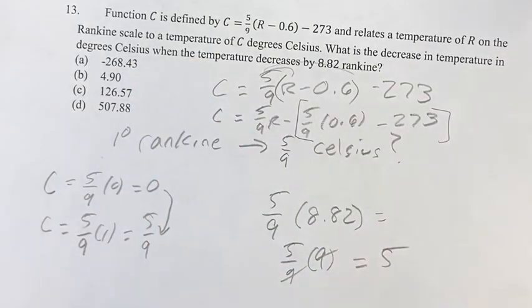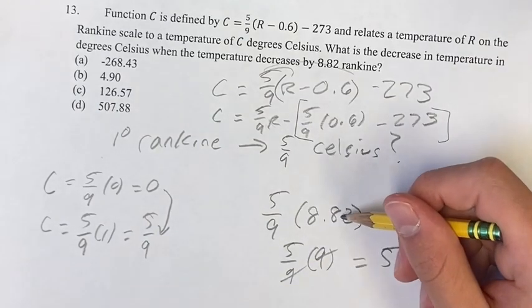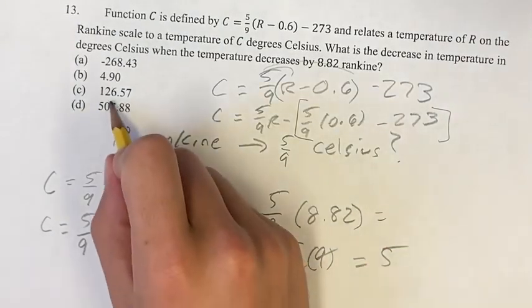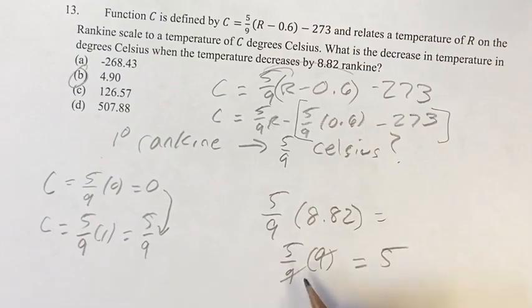But since we have negative 260, 120, 500, changing this from 8.82 to 9 is not going to suddenly give us 500 points of Celsius change. So 5 is close to 4.9, so that's going to be our answer since 9 is close to 8.82. So these are going to be your final answer.